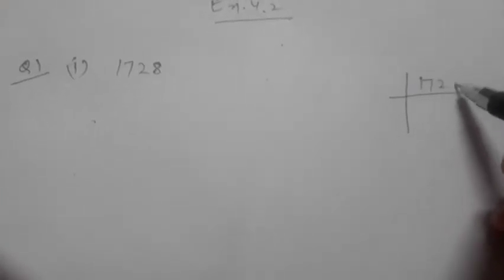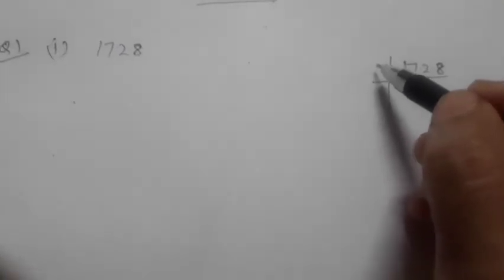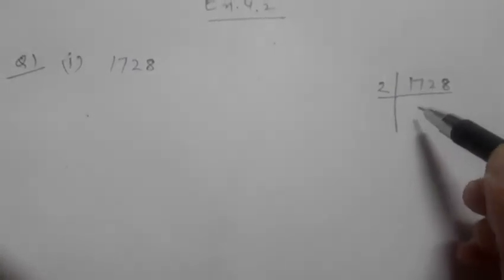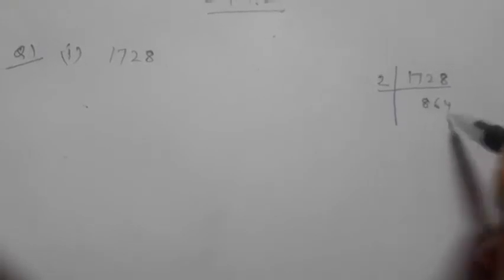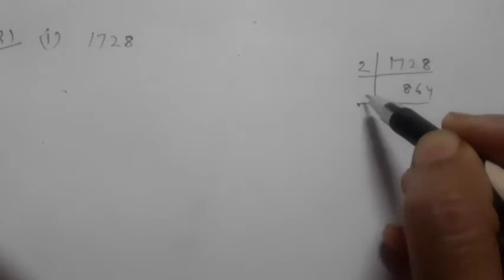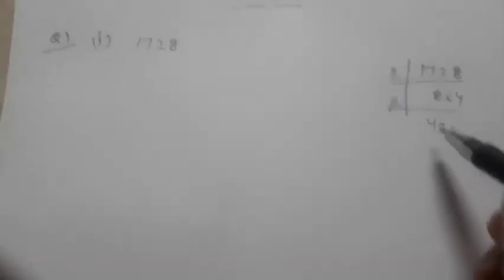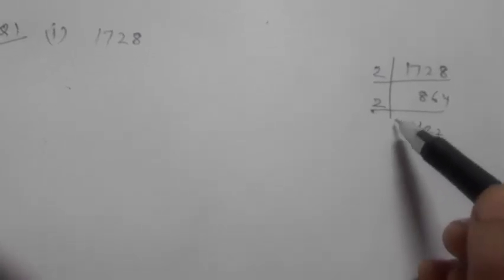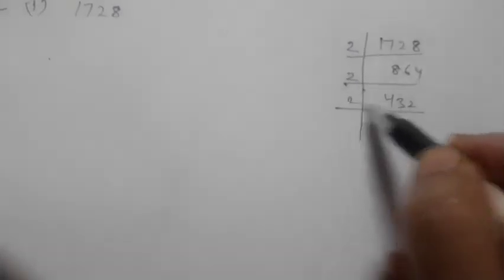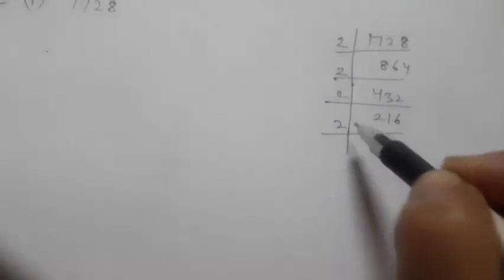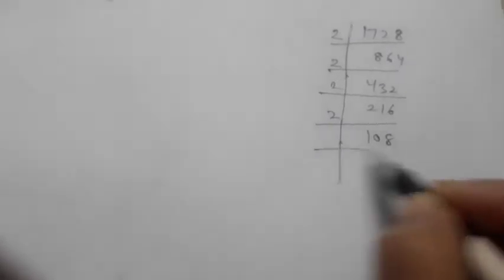For finding out the cube root of 1728, we have to go by the method of prime factorization. We will make the factors of it. First it will go by 2, answer would be 864. Then again by 2: 432. Then again by 2: 216. Then again by 2: 108. Then again by 2: 54. Then again by 2: 27. Then it will go by 3 — 3 nines are 27, 3 threes are 9, and 3 ones are 3. Hope the prime factorization is very much clear.